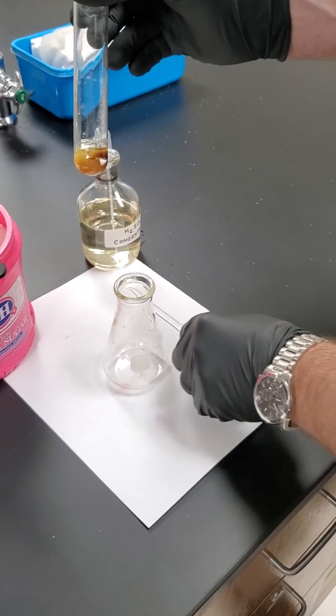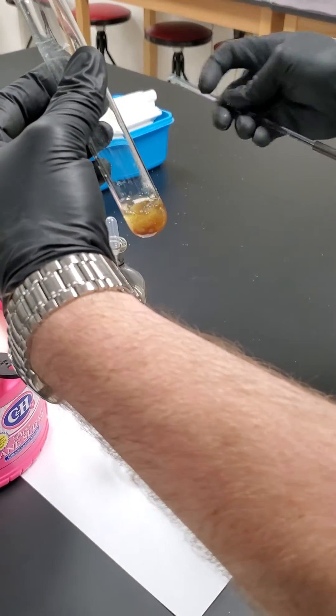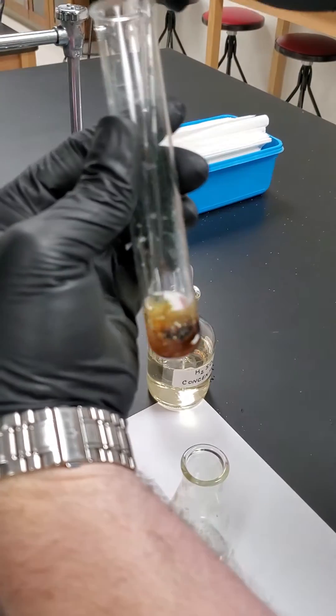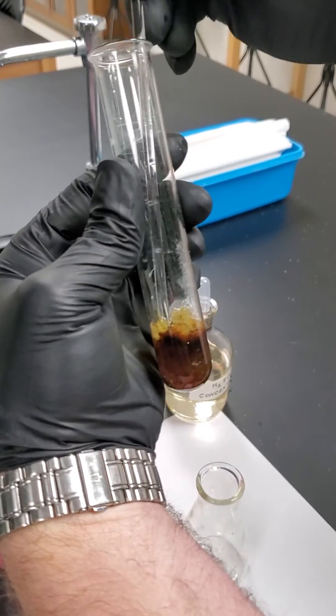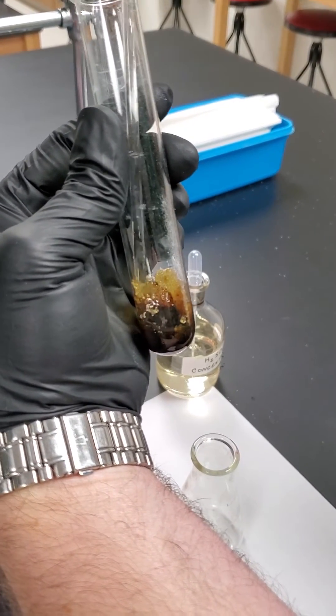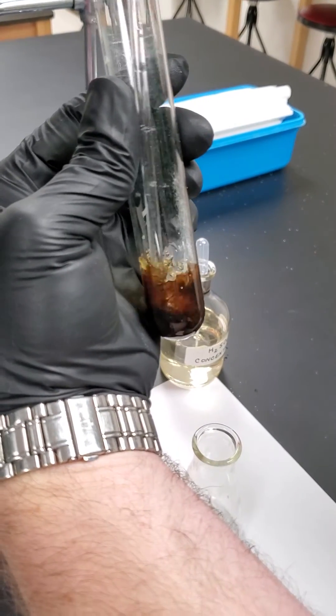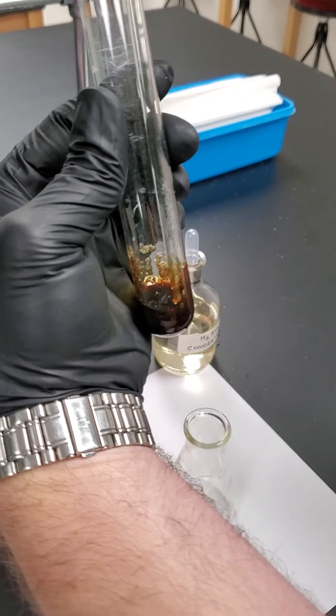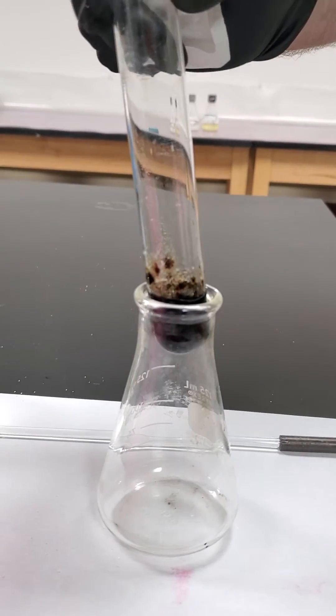Just notice now, just upon adding, starting to turn dark. Some yellow. Starting to discolor the sugar. Much like it would in our stomach with hydrochloric acid. As we stir it. Notice. Much, much darker. So we're going to let this sit a few minutes. And come back when there's a bigger change.